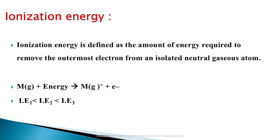What is meant by ionization energy? Ionization energy, in simple terms, can be described as a measure of the difficulty in removing an electron from an atom or ion, or the tendency of an atom or ion to surrender an electron. The loss of an electron usually happens in the ground state of the chemical species. Ionization energy can be defined as the amount of energy required to remove the outermost electron from an isolated neutral gaseous atom.